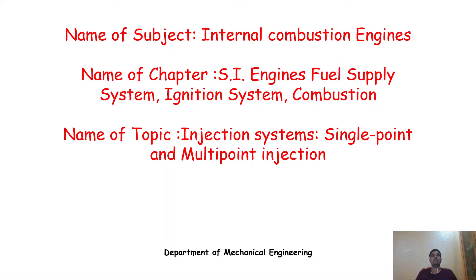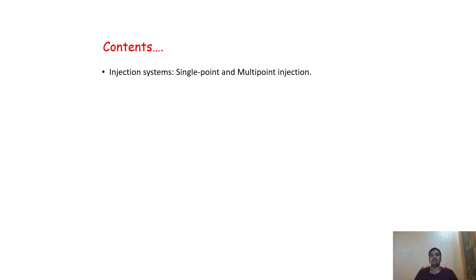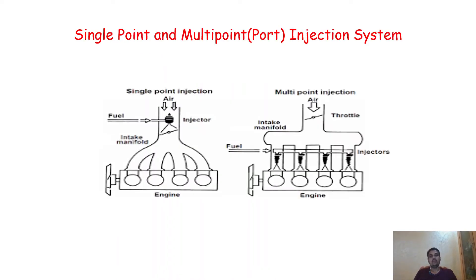The subject is Internal Combustion Engines, the chapter covers SI engines including fuel supply system, ignition system, and combustion. The topic for today is injection systems. In the last few videos we discussed different things related to the carburetor and solved numerical problems on it. Today we are going to start discussing a very important topic — the injection system used in all SI engines.